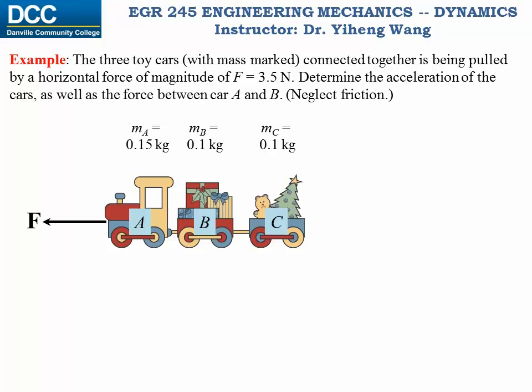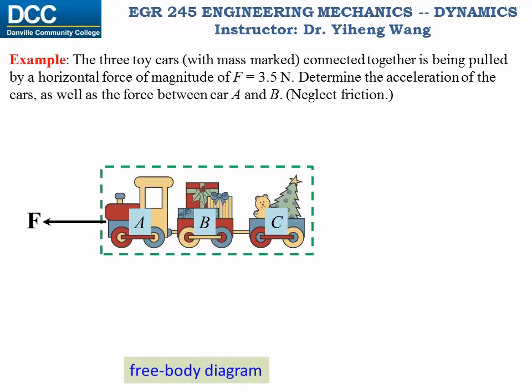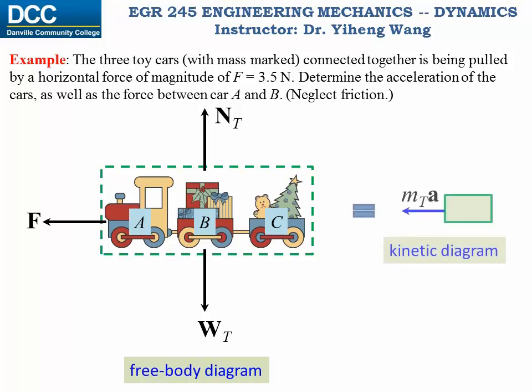To solve the first part of the problem, we need to draw the free body diagram of this entire car set as one system. Therefore we need to include all the external forces acting on this system. We have the applied force, 3.5 newton. We also have the total weight force, as well as the total support force. And this completes the free body diagram for the system. Therefore we can draw the corresponding kinetic diagram showing the horizontal inertia force, which equals the total mass times acceleration. Because there is no motion along the vertical direction, there is no acceleration along the vertical direction.